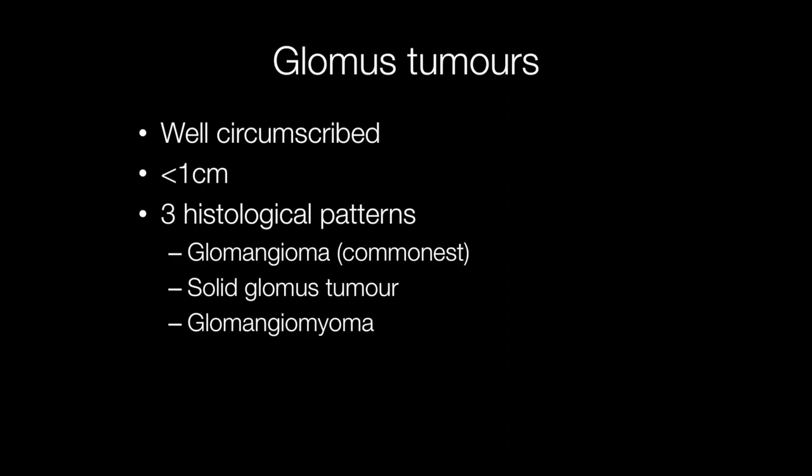Glomus tumours are well circumscribed, usually less than one centimetre in diameter. There are three main histological patterns. The glomangioma is a glomus tumour with a prominent vascular component; this is the commonest type and accounts for approximately 60% of glomus tumours.